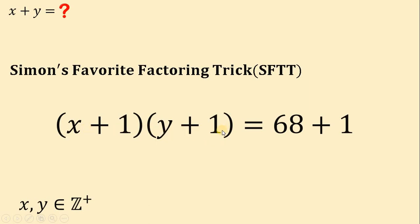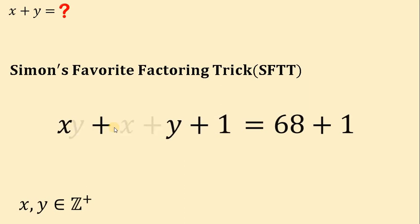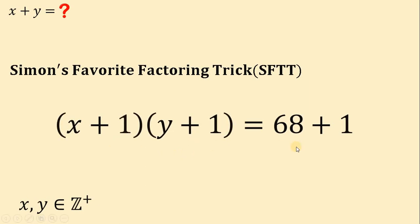If we multiply this binomial, we get xy plus x plus y plus 1. So let's go back to its factor form. We will use this later. And on the right-hand side, 68 plus 1 will give us 69.